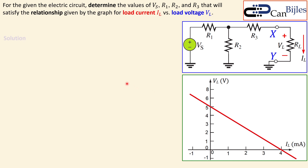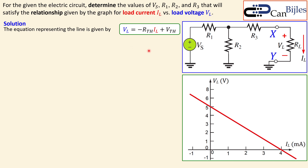Let's see how we can tackle this. The equation representing this red line can be given by an expression for load voltage on the y-axis and load current on the x-axis. What this is saying is: if you remove the load and look between nodes X and Y, you determine the Thevenin resistance and Thevenin voltage. It is a decreasing line with a negative slope, starting at five volts, and reaching four milliamps when the voltage goes to zero.